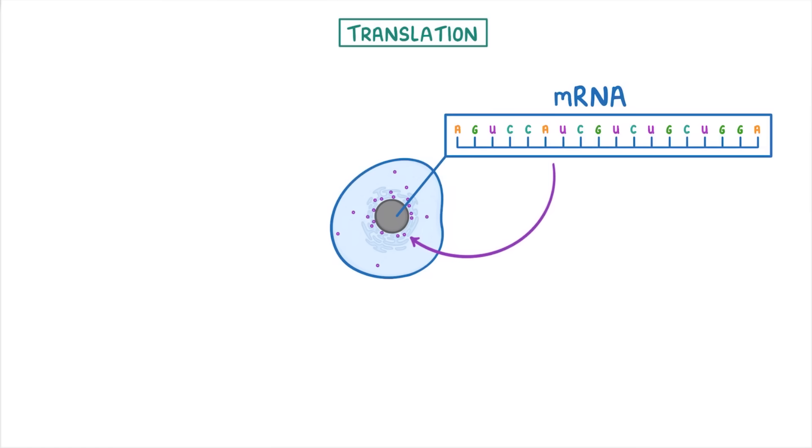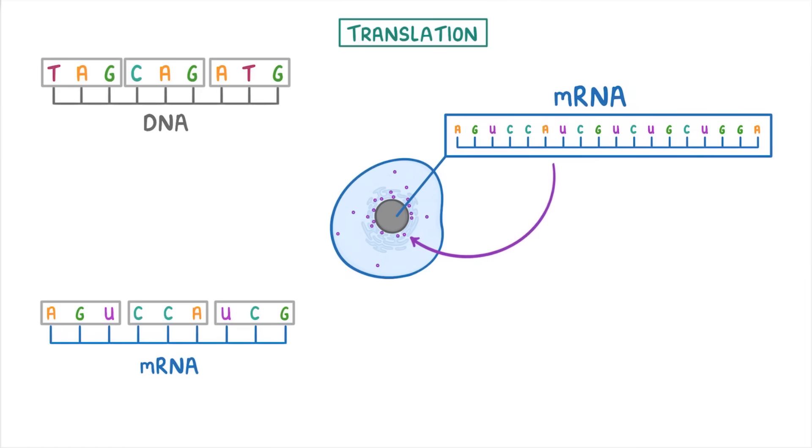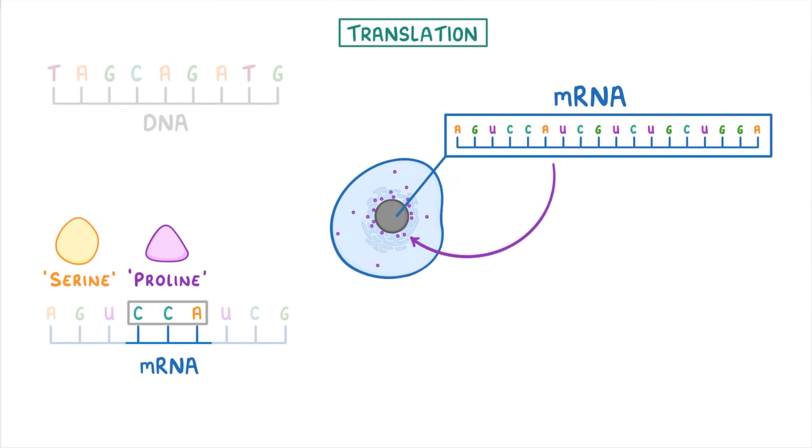To help understand this part, it's important to remember that for both DNA and mRNA, each group of three bases, which is called a triplet or codon, codes for a specific amino acid. To make proteins, our cells use 20 different amino acids, and each one has a different three-base codon. For example, this triplet AGU codes for the amino acid serine, whilst CCA here codes for proline. You don't have to remember these examples; we're just using them to illustrate the point.